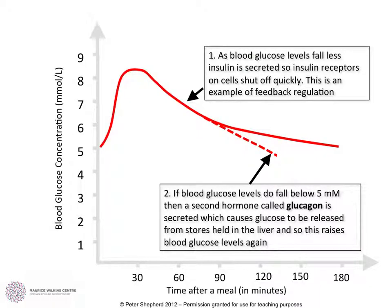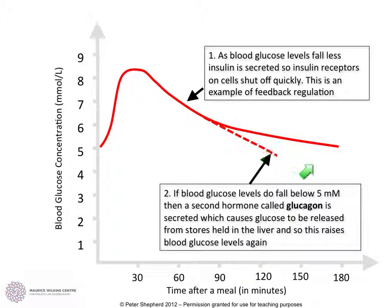There are a couple of things that happen. Firstly, as the blood glucose level falls past a certain point, the insulin receptors are actually shut off, so even if there is still a bit of insulin in our blood, the receptors are no longer going to respond to it — another example of feedback regulation. Secondly, if blood glucose does fall below 5, then the antagonistic hormone glucagon is going to be secreted, and rather than continuing this downward trend, the liver will release glucose back from stored glycogen, raising blood glucose levels up again.